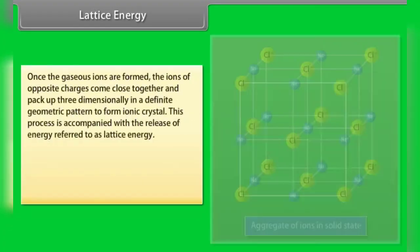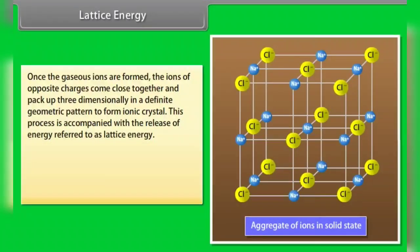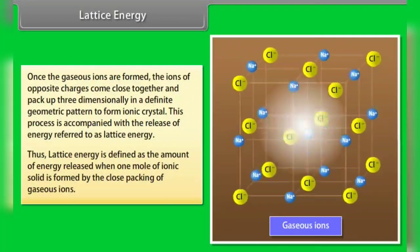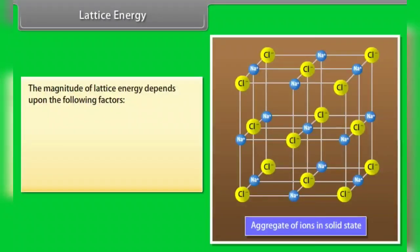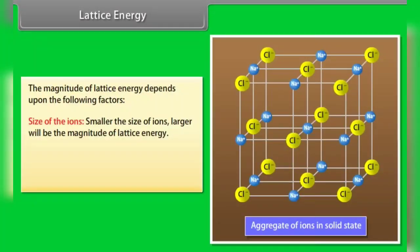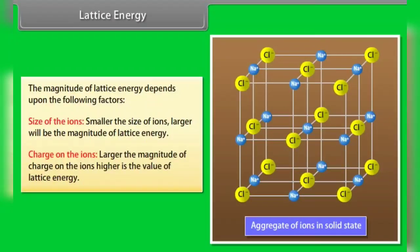Lattice energy: once the gaseous ions are formed, ions of opposite charges come close together and pack up three-dimensionally in a definite geometric pattern to form an ionic crystal. This process is accompanied by the release of energy referred to as lattice energy. Lattice energy is defined as the amount of energy released when one mole of ionic solid is formed by the close packing of gaseous ions. The magnitude of lattice energy depends on the size and charge of the ions: smaller ions give greater inter-ionic attraction and larger lattice energy; larger charge on ions gives higher lattice energy.